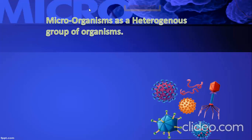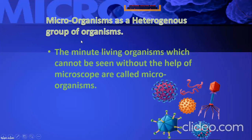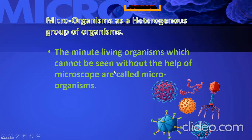We use a microscope to see them. Organisms which are seen by microscope — write the complete answer. Good, everyone. Heterogeneous group means different types of organisms which belong to different class, phylum, or kingdom, and their sizes and structures are different — so they are called a heterogeneous group. The minute living organisms which cannot be seen without the help of a microscope are called microorganisms, and at times they are also called microscopic organisms.